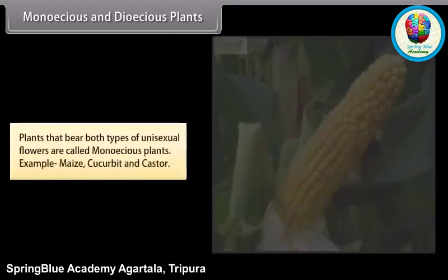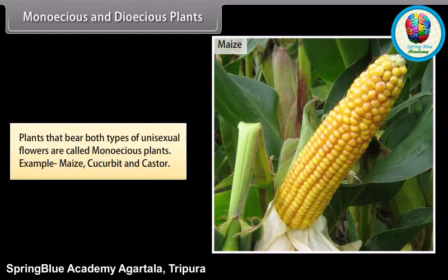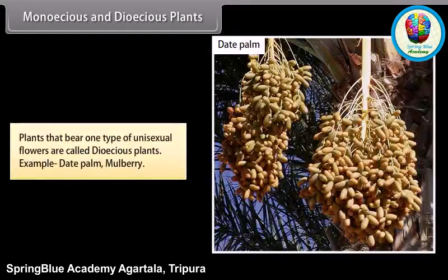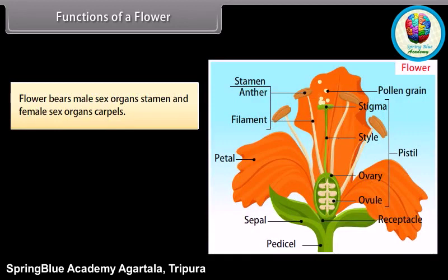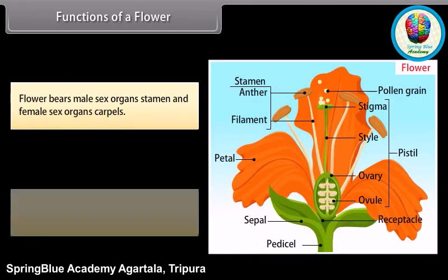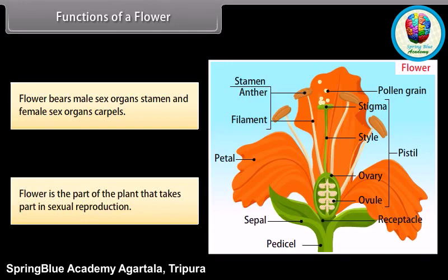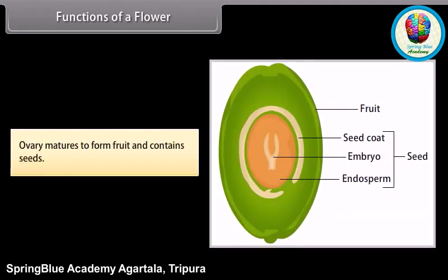Plants that bear both types of unisexual flowers are called monoecious plants; examples include maize, cucurbit, and castor. Plants that bear only one type of unisexual flower are called dioecious plants; examples include date palm and mulberry. The flower bears male sex organs (stamens) and female sex organs (carpels), and is the part of the plant that takes part in sexual reproduction. The ovary matures to form fruit and contains seeds.